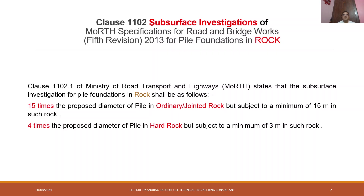For ordinary jointed rock, the investigation depth is subject to a minimum of 15 meters. For the second case, if you encounter hard rock, you have to go for subsurface investigation up to at least four times the proposed diameter of pile, subject to a minimum of 3 meters in such rock. So in ordinary jointed rock it should be 15 meters, and in hard rock it should be 3 meters.